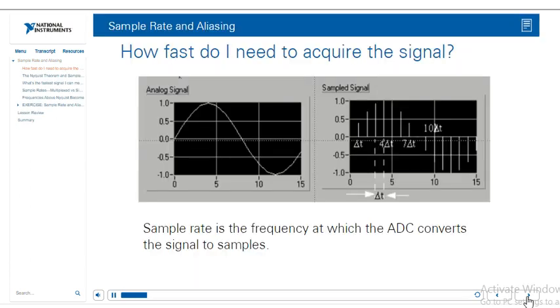So the first question is, how fast do I need to acquire the signal? The sample rate is the speed at which the device can acquire a signal. When we acquire a waveform signal we see the nice waveform, but you have to realize that the sampled signal is really just a discrete array of sampled values.